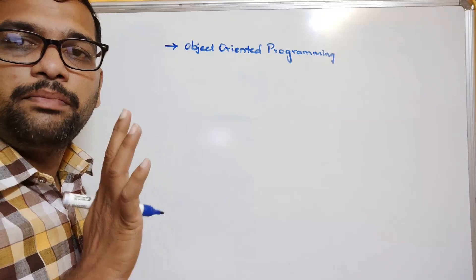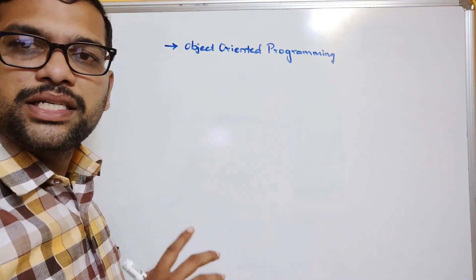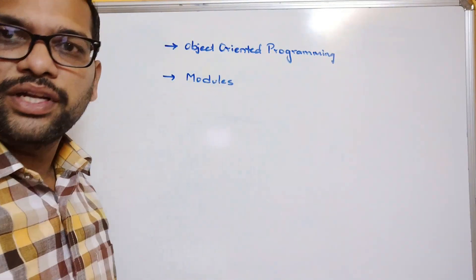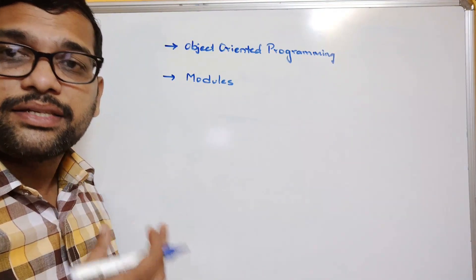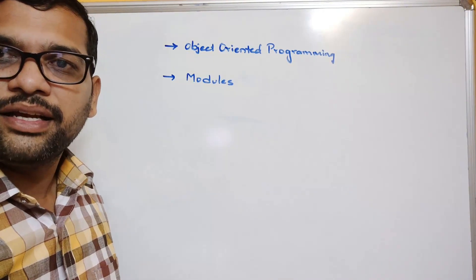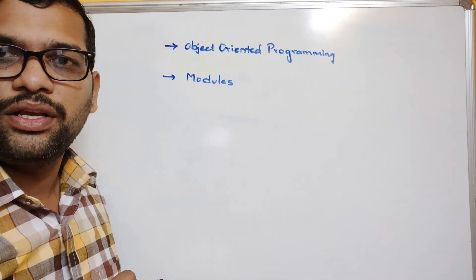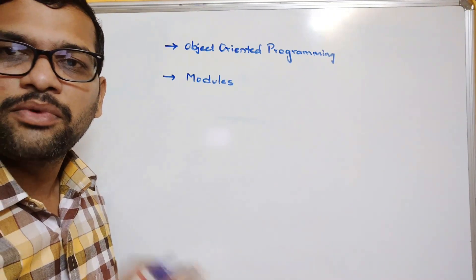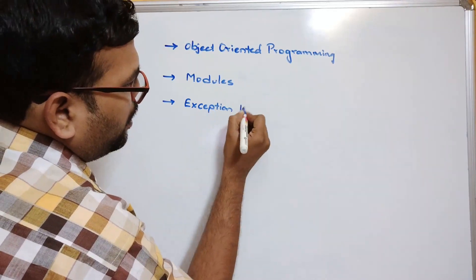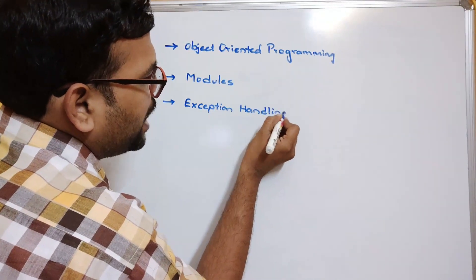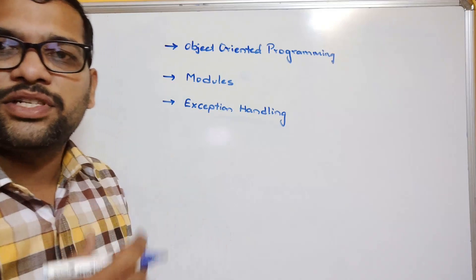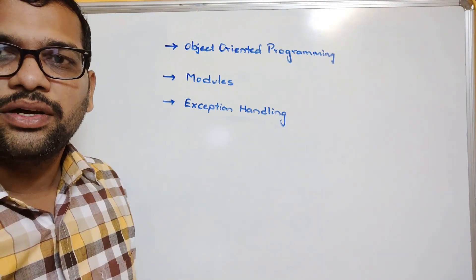After object-oriented programming, we will cover modules. In Python, there are different modules, and in each module there are different classes and functions. We will learn how to create our own modules and how to use already existing modules. After that, we will cover exception handling — how to handle errors in our programs so that errors don't occur.